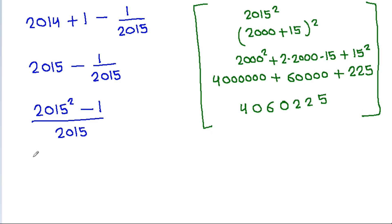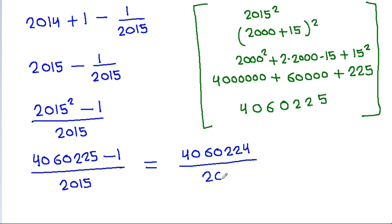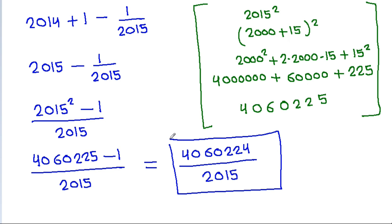So the final result is: 2015 squared minus 1 divided by 2015, which equals 4060225 minus 1 by 2015, giving 4060224 by 2015. Therefore the answer is 4060224 by 2015. Thank you.